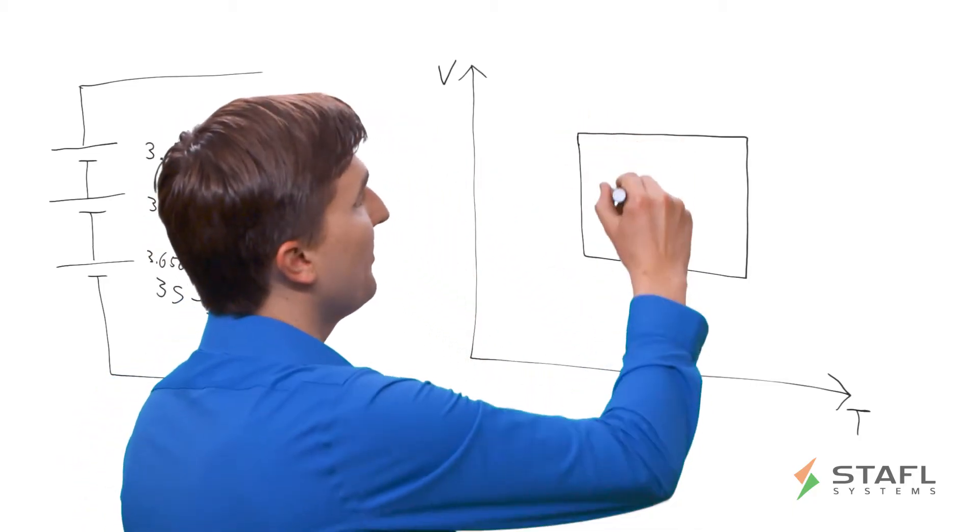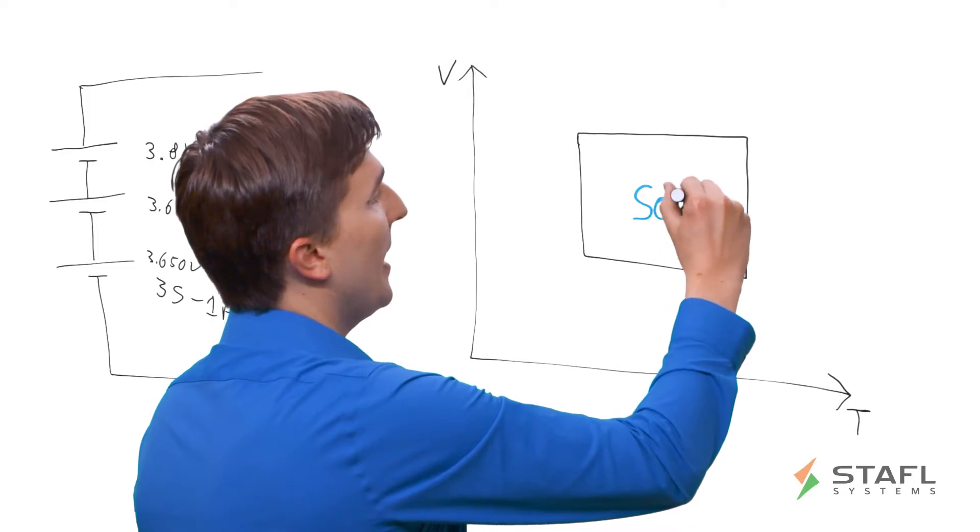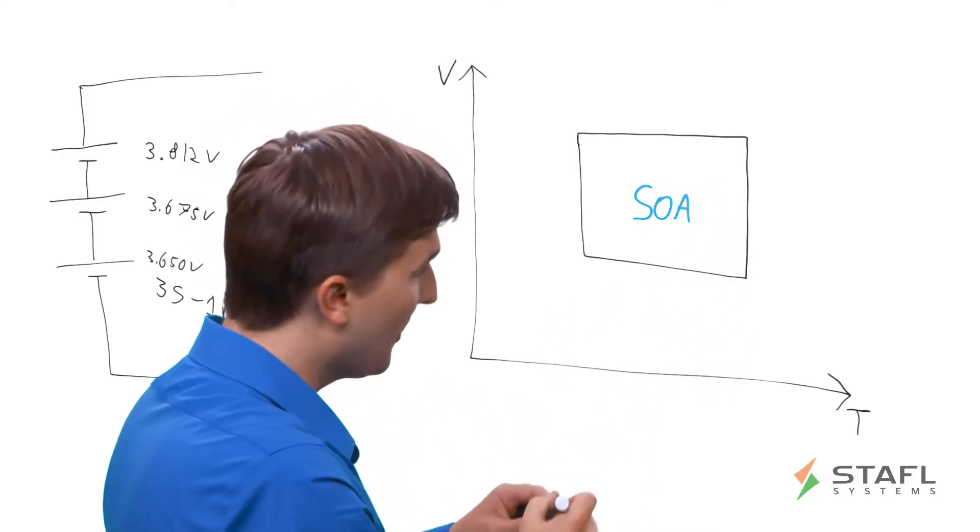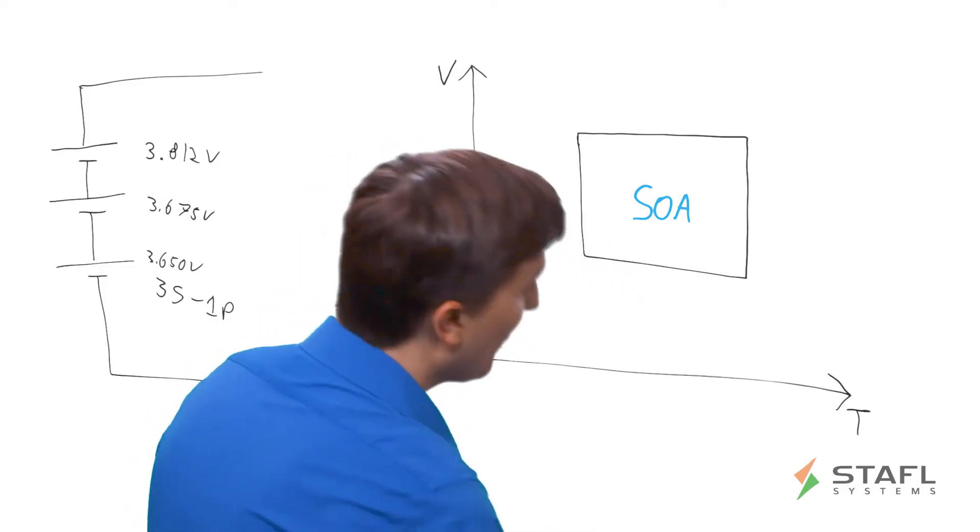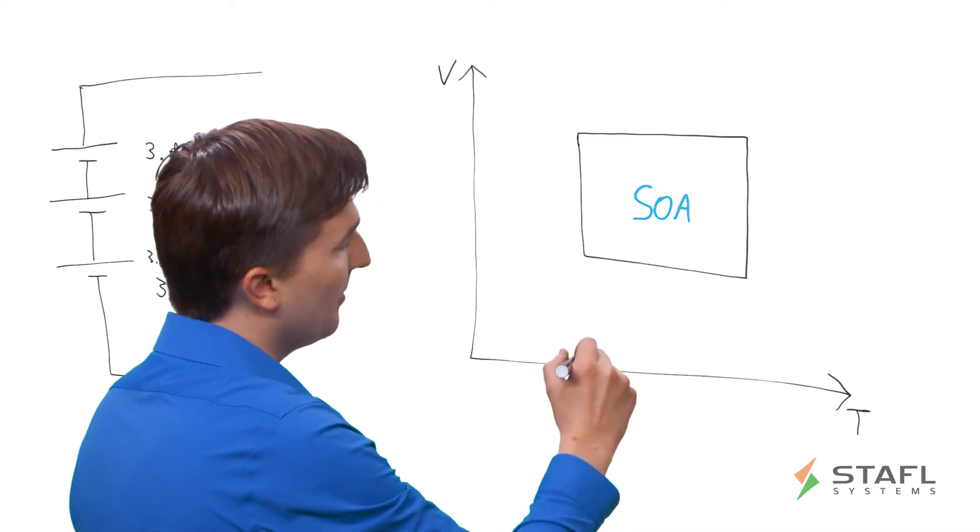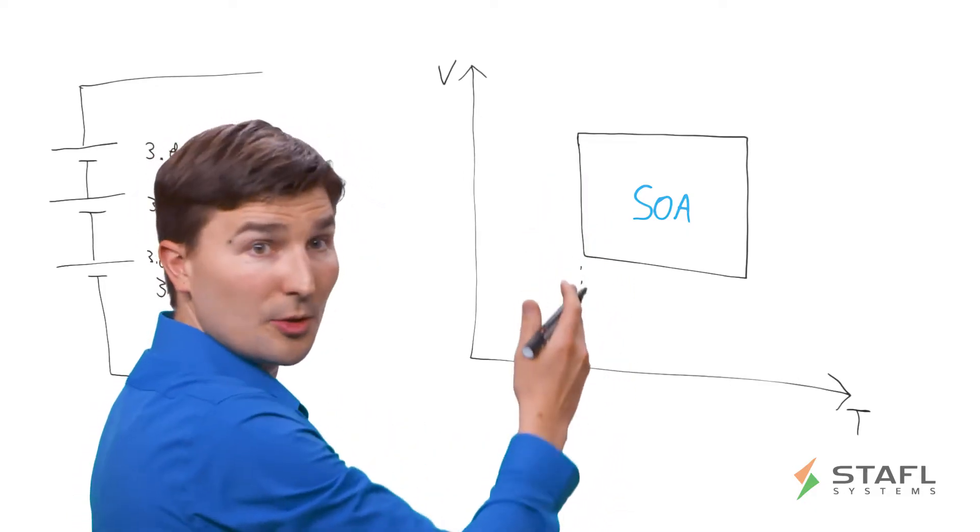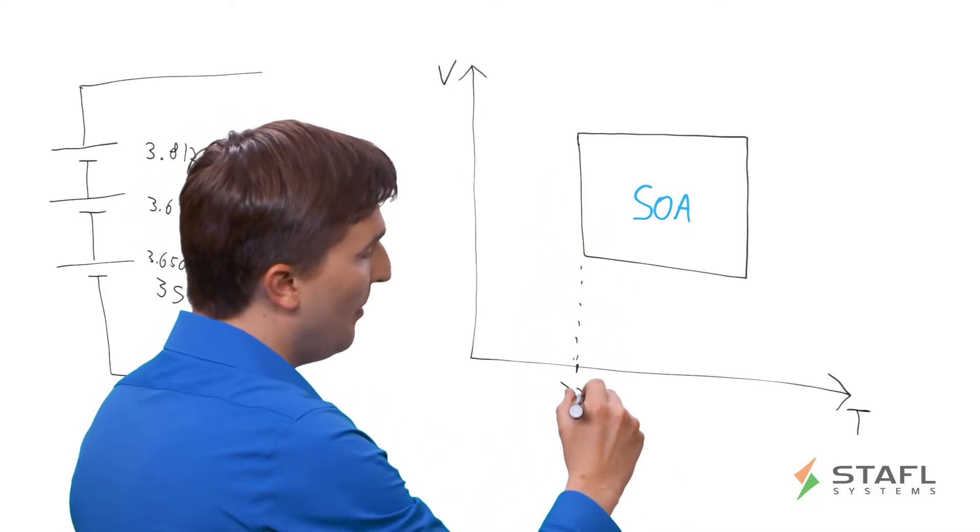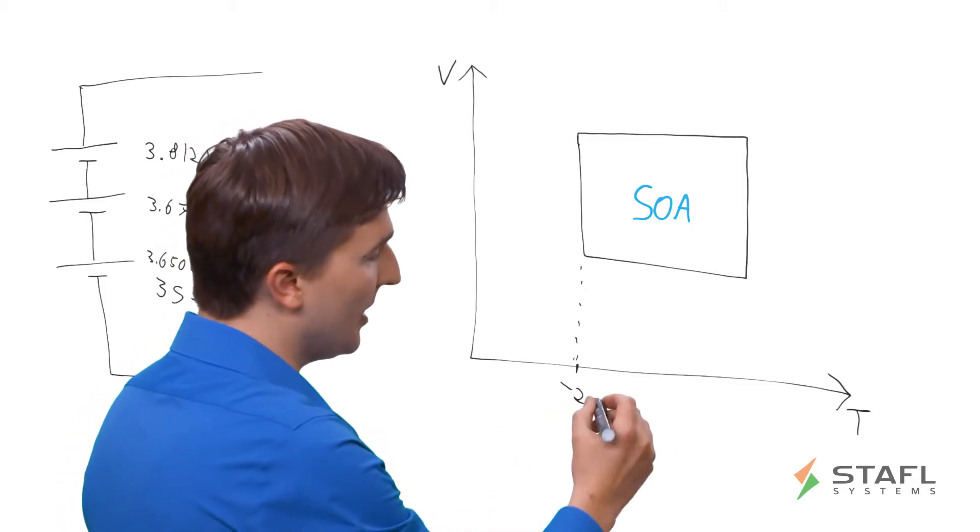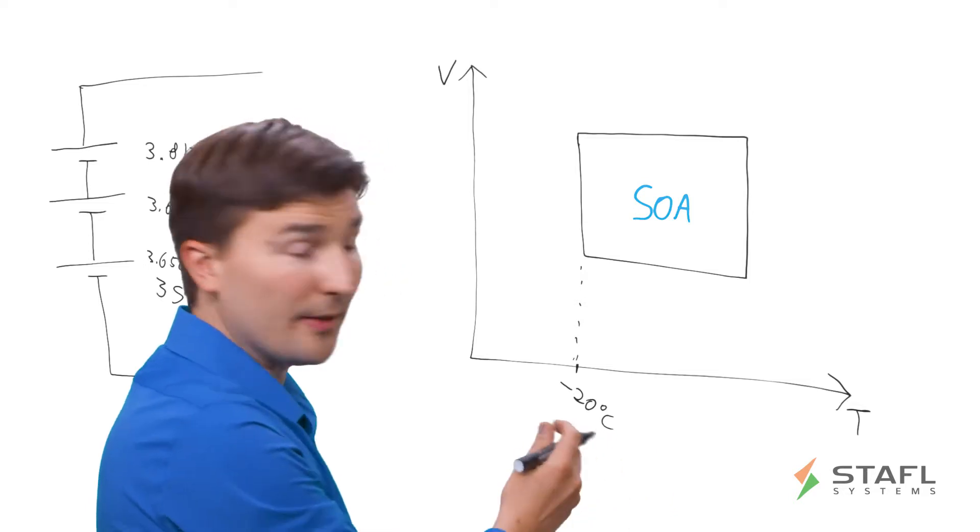So this region is the SOA, or safe operating area of the lithium-ion cells. And how do you define that? Well, down on the x-axis, this point here, which corresponds to this side of the square, is the minimum safe temperature that you can operate the cells at. For example, some cells will have a minimum temperature of negative 20 degrees C.